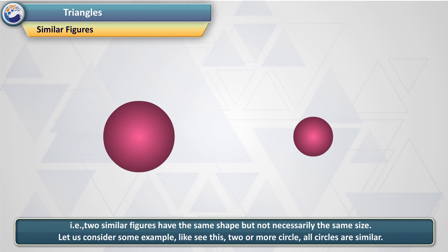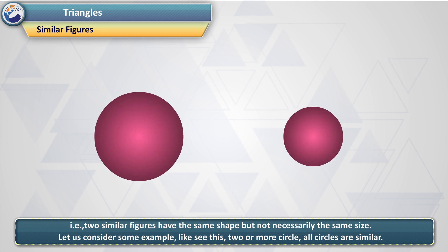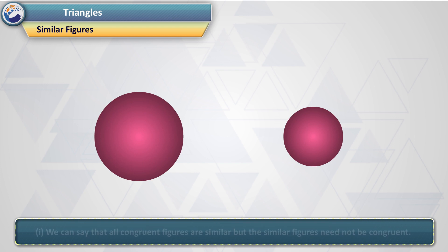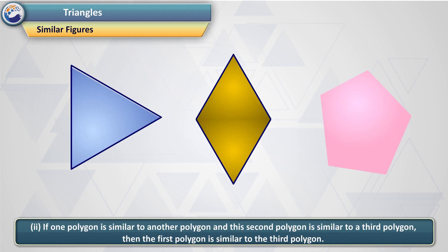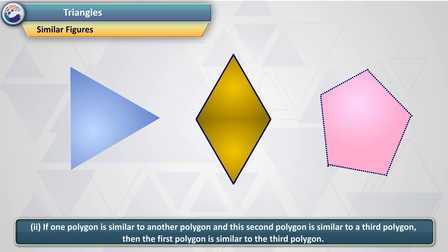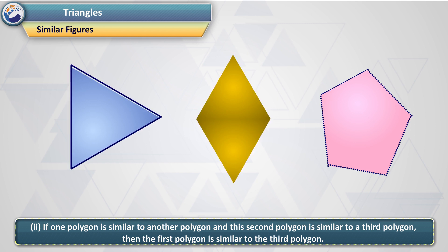Let us consider some examples. Two or more circles — all circles are similar. We can say that all congruent figures are similar, but similar figures need not be congruent. If one polygon is similar to another polygon and the second polygon is similar to a third polygon, then the first polygon is similar to the third polygon.